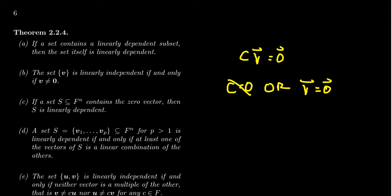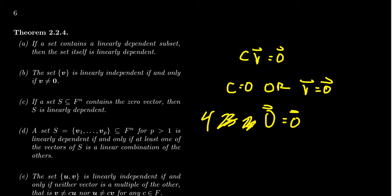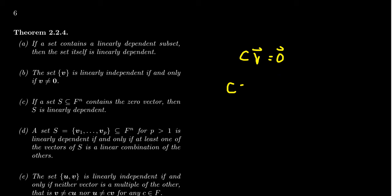A single vector by itself as a set is linearly independent if and only if the vector is not the zero vector. If the vector is the zero vector, you could multiply it by two, three, or four and still get zero—there are non-zero coefficients you could use to produce the zero vector. So a singleton is linearly independent if and only if it's not the zero vector. A single vector is pretty easy to check.